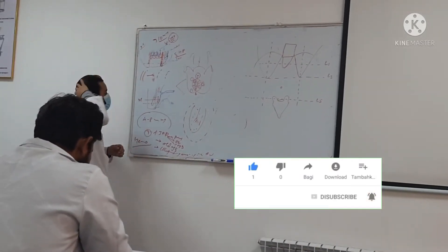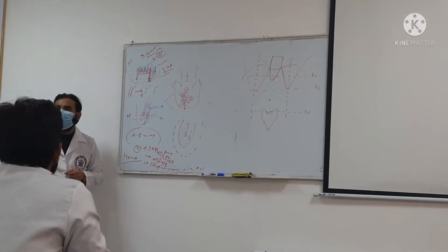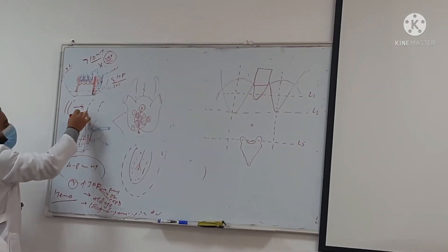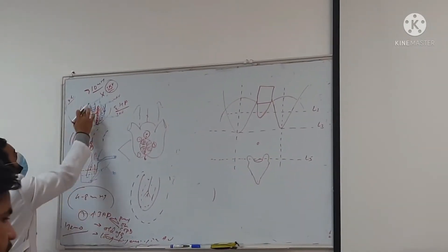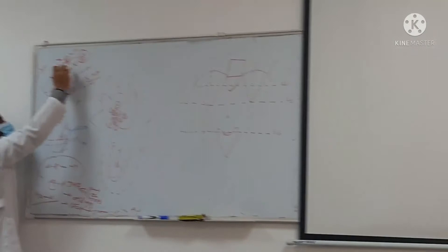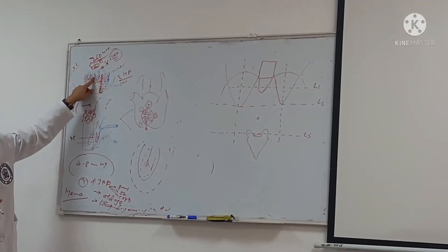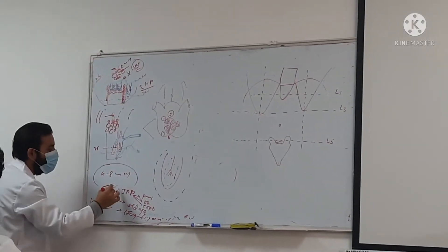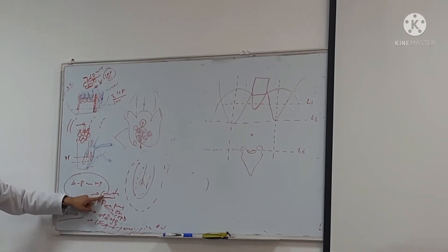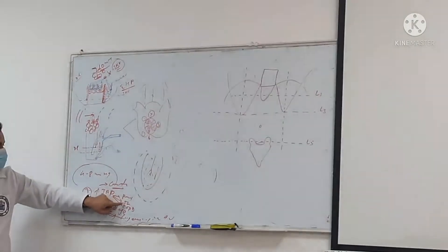The next condition is constipation. Constipation means you are not passing stool for many days, or passing stool that is very hard. This causes stool impaction in the rectum. If the stool is impacted in the rectum, it can compress the veins going upward. If compressed, they cannot carry venous blood easily upward; stasis occurs, and again hemorrhoids result. So constipation is another cause.